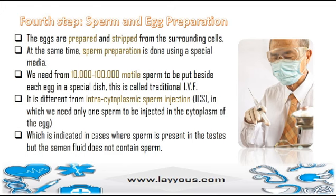Fourth step: sperm and egg preparation. The eggs are prepared and stripped from surrounding cells. At the same time, sperm preparation is done using special media. We need from 10,000 to 100,000 motile sperm to be placed beside each egg in a special dish — this is called traditional IVF. This differs from intracytoplasmic sperm injection, ICSI, in which only one sperm is injected into the cytoplasm of the egg, indicated when sperm is present in the testes but absent from the semen fluid.